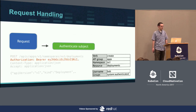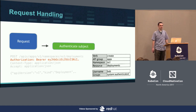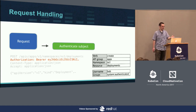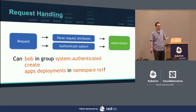The next step is authentication. The authentication layer looks at the request and determines who is making it. In this case, there's a bearer token, so authentication determines this request is coming from Bob. The request attributes and the user information become the input to the authorizer. For this request, the question we're going to ask is: can Bob, in the group System Authenticated, create apps deployments in this namespace? Let's look at how we would set up RBAC to allow that.